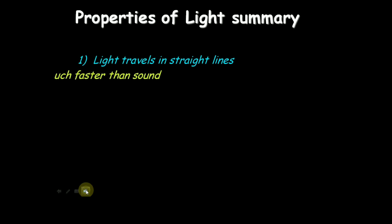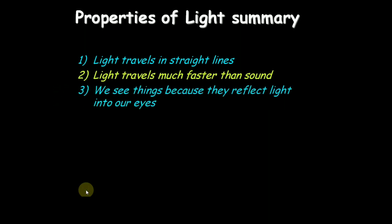Light travels in straight lines. Light travels much faster than sound. We see things because they reflect light into our eyes. Shadows are formed when light is blocked by an object.